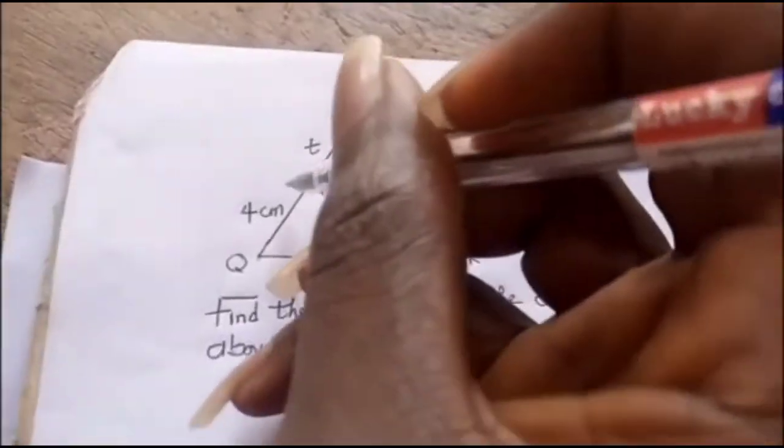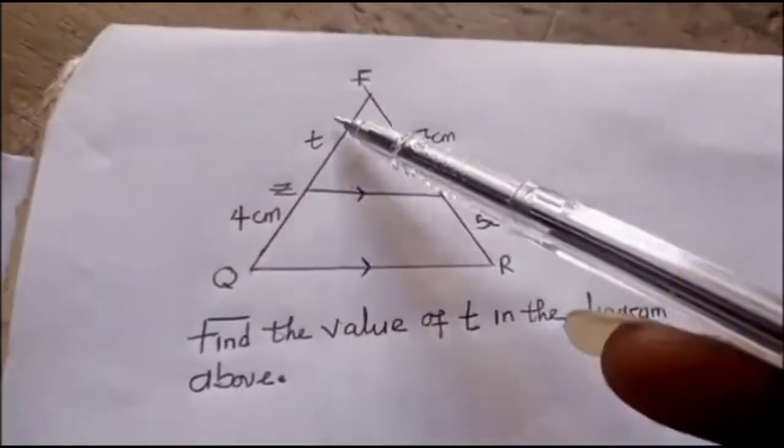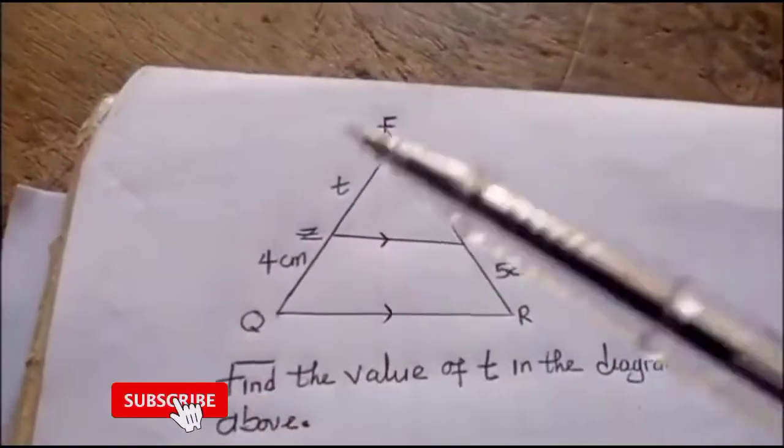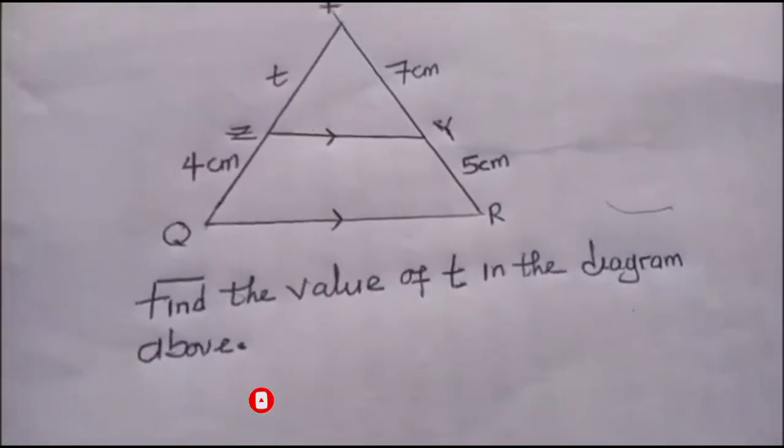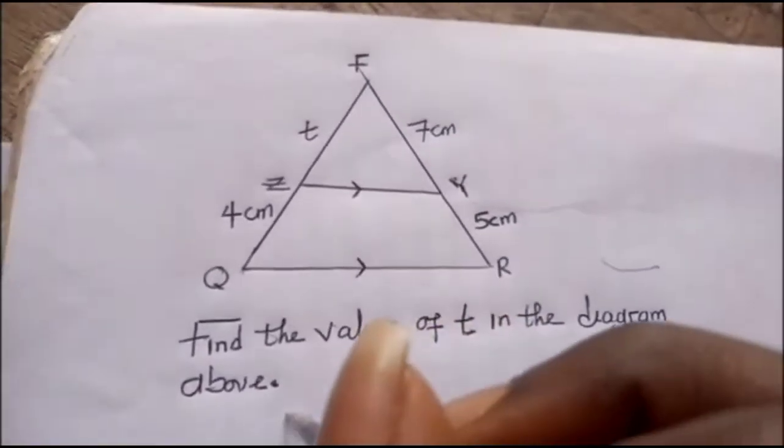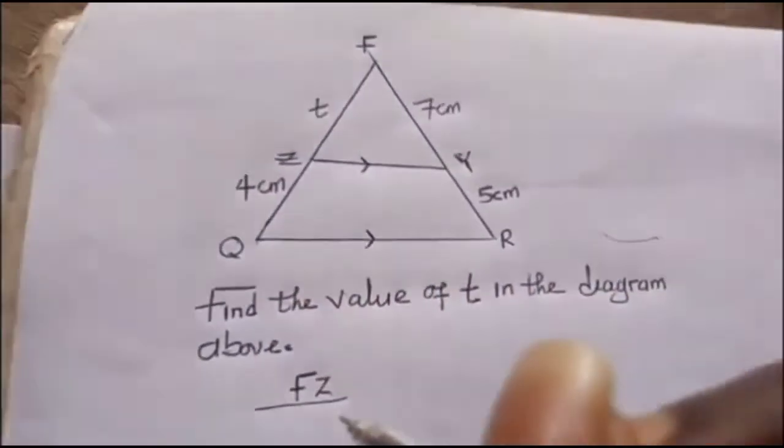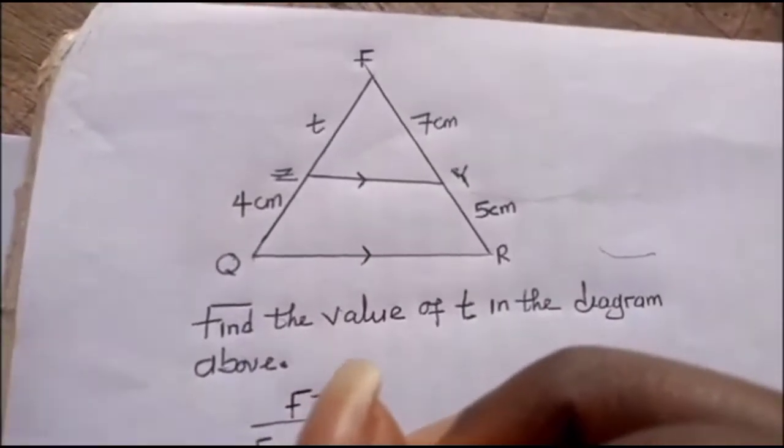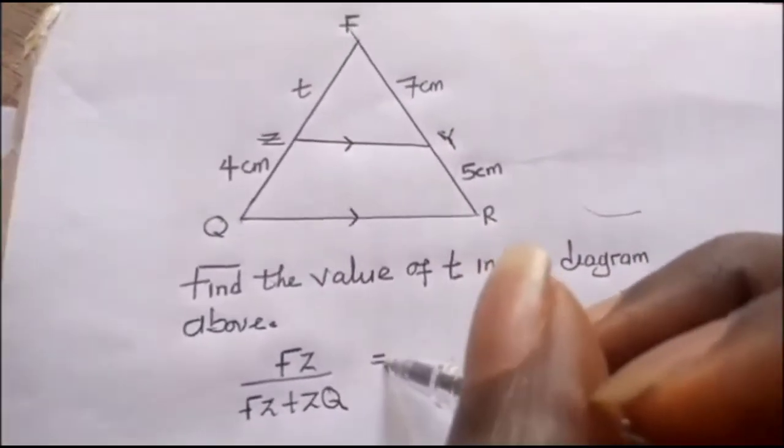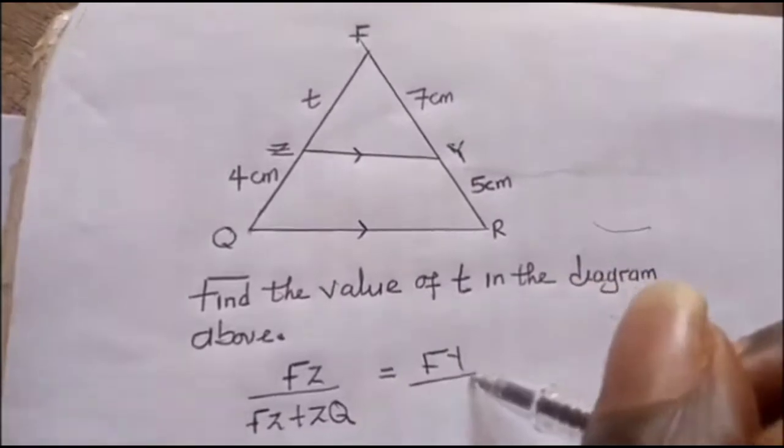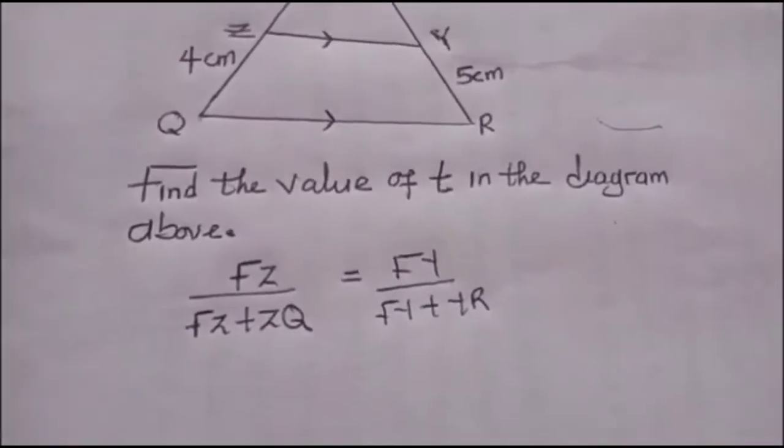Let's call this side Y and this side Z. So we can find the ratio of these two sides FZ and the summation of F to Q, likewise the ratio of FY and the summation of F to R. So I'll be having FZ over FZ plus ZQ equal to FY over FY plus YR. So this is the ratio formula.